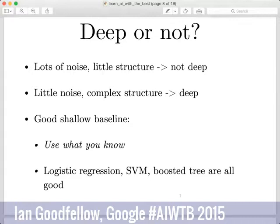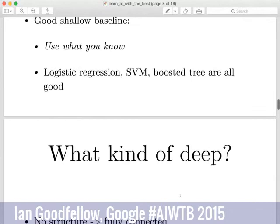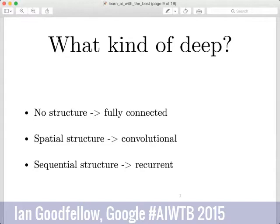If you have a very complicated problem and enough data to fit it, then you want to go ahead and use deep learning. The basic way you decide what kind of deep learning model to use is: first, if there's already a published baseline that works well in this task, copy the architecture from it. But if you're working on a totally new problem, the main way you decide is by looking at what kind of structure there is in the data.